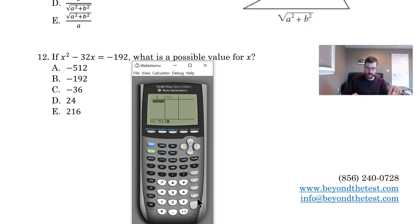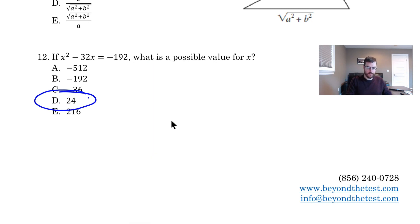If you do this, it will allow you to actually enter in those values to see which one gives us a y value of negative 192. So if I type in negative 512, I could see that's not the answer. If I type in negative 192, that's not the answer. Negative 36, not the answer. 24. Oh, look at that. When I put in 24, I get negative 192. So you don't have to retype it over and over and over again. You could just type the equation once and then figure out which one works just by putting the answers in and typing those in. So we know the answer here would be D, which is 24.